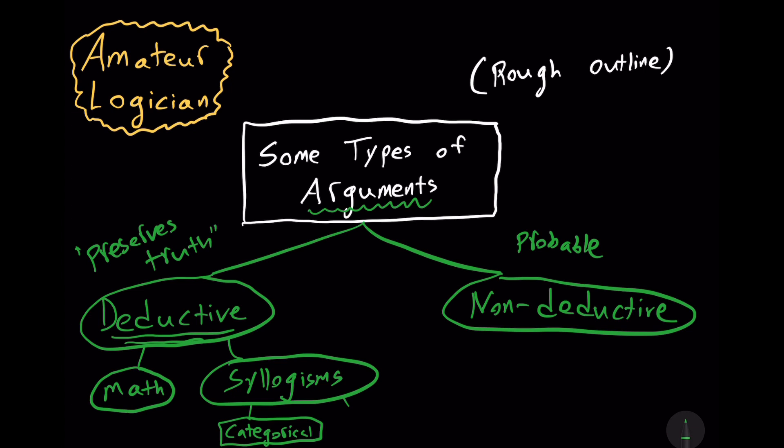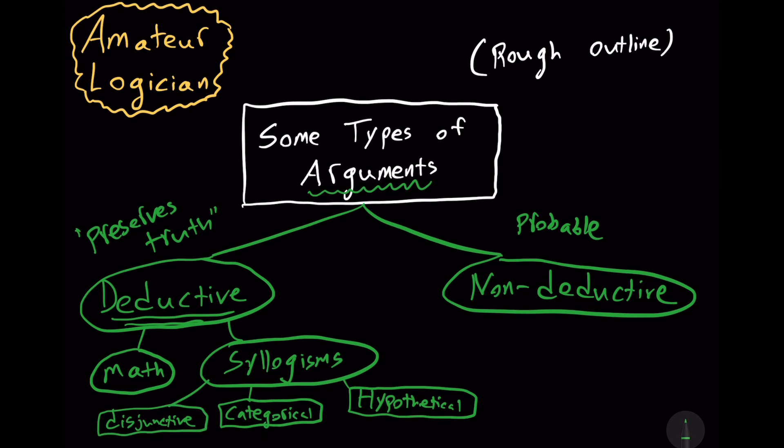There's also hypothetical syllogisms. Consider something like: if it's raining, the ground is getting wet. It is raining, therefore the ground is getting wet. You also have disjunctive syllogisms. Consider something like: it is either sunny or cloudy outside right now. It's not cloudy, therefore it is sunny. So that would be a disjunctive syllogism, another form of deduction.